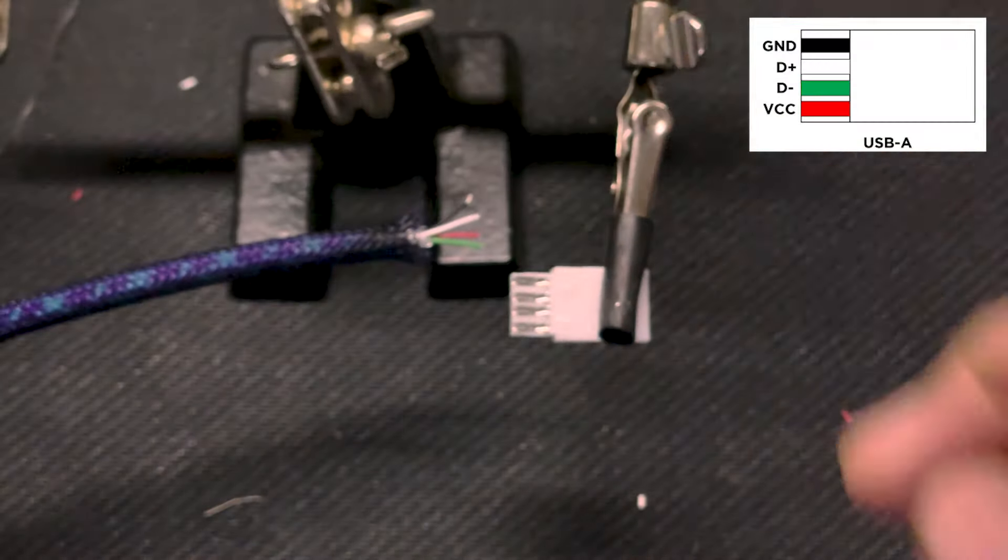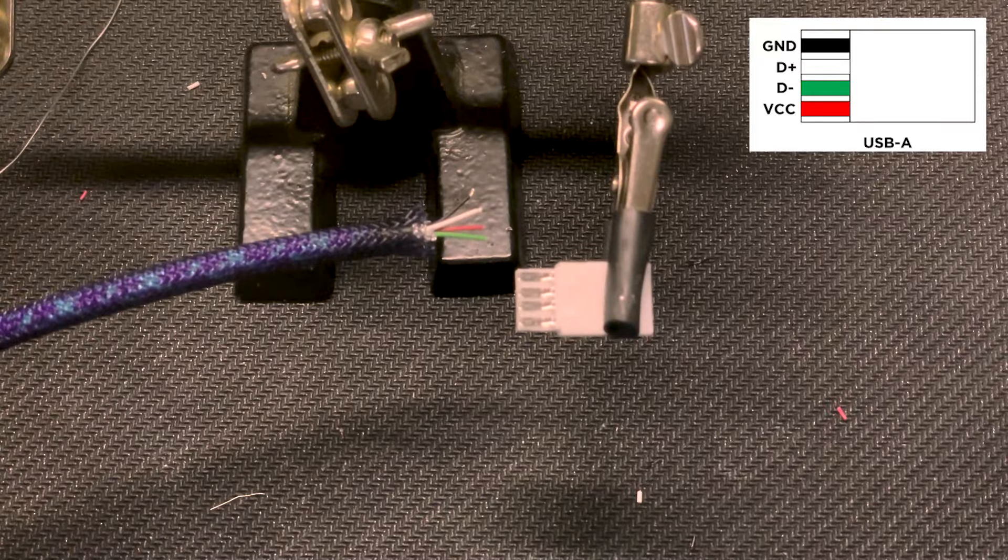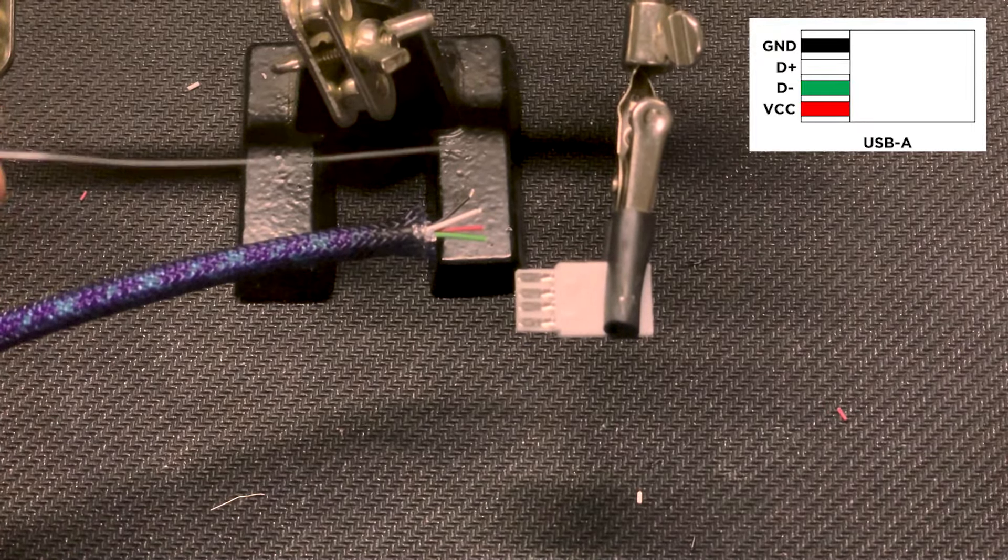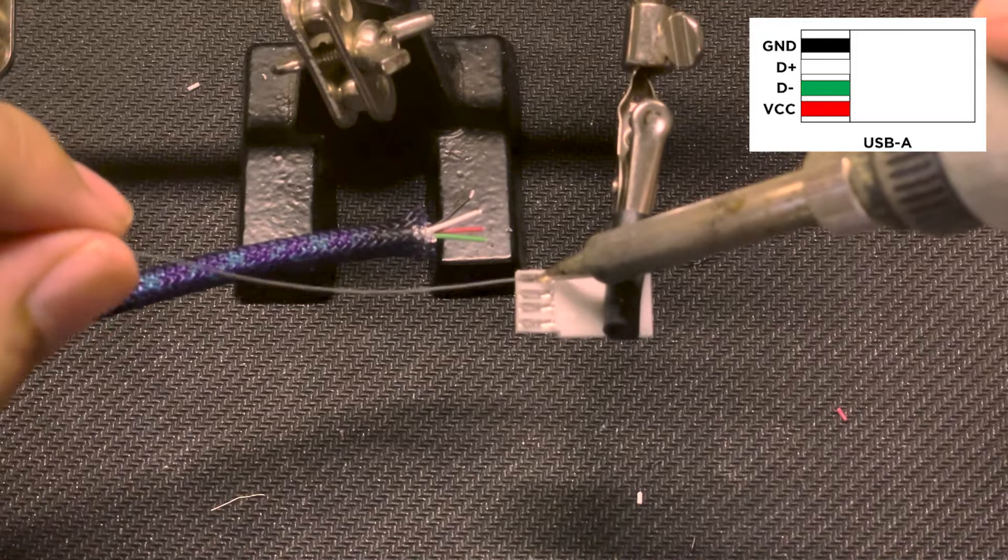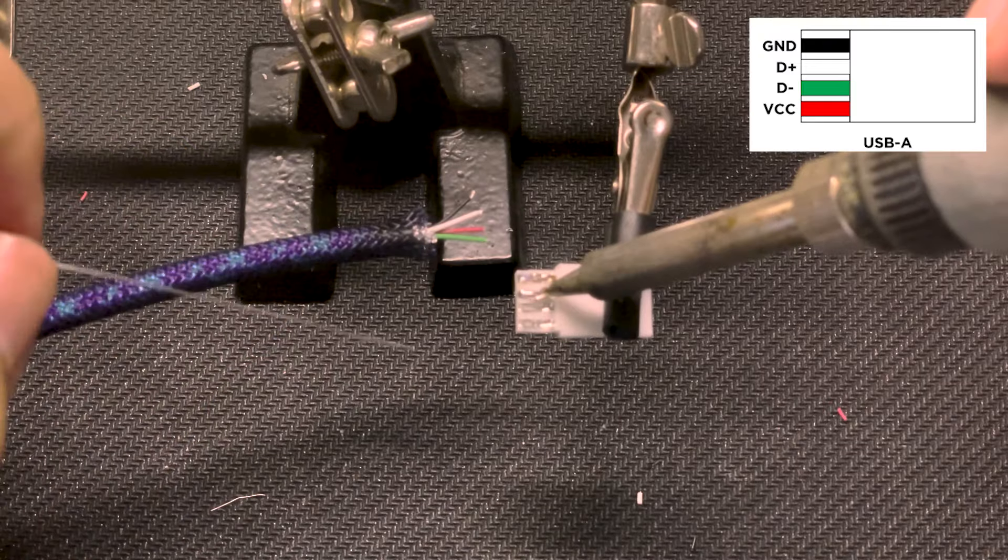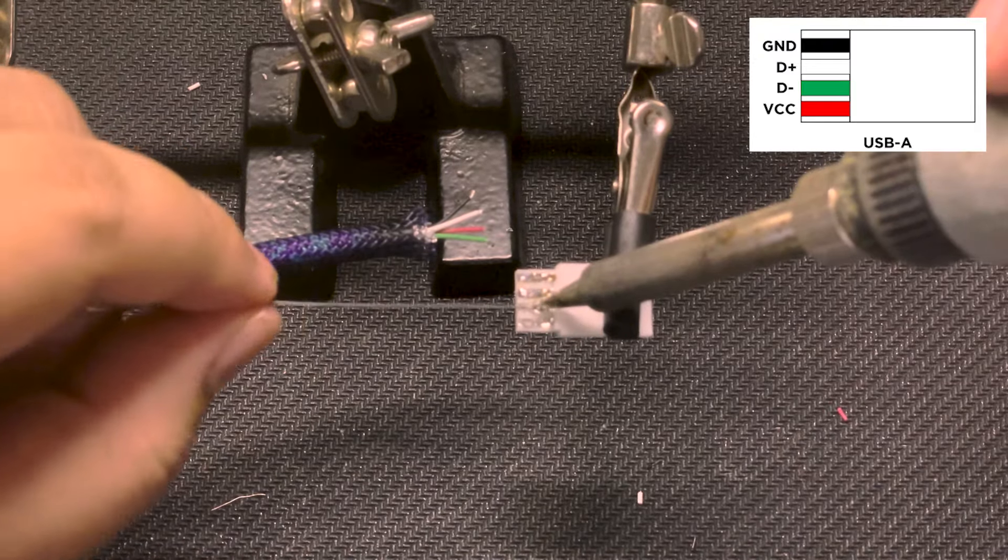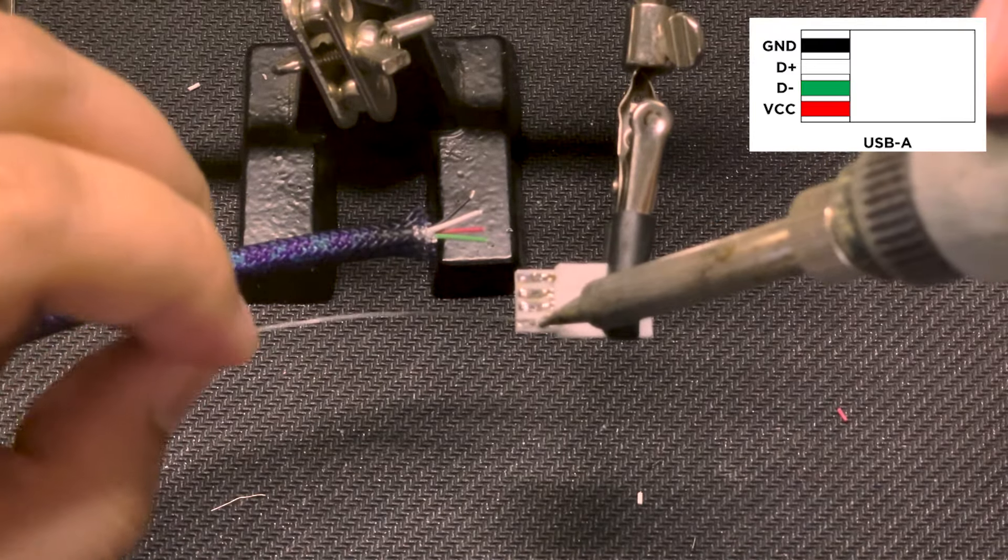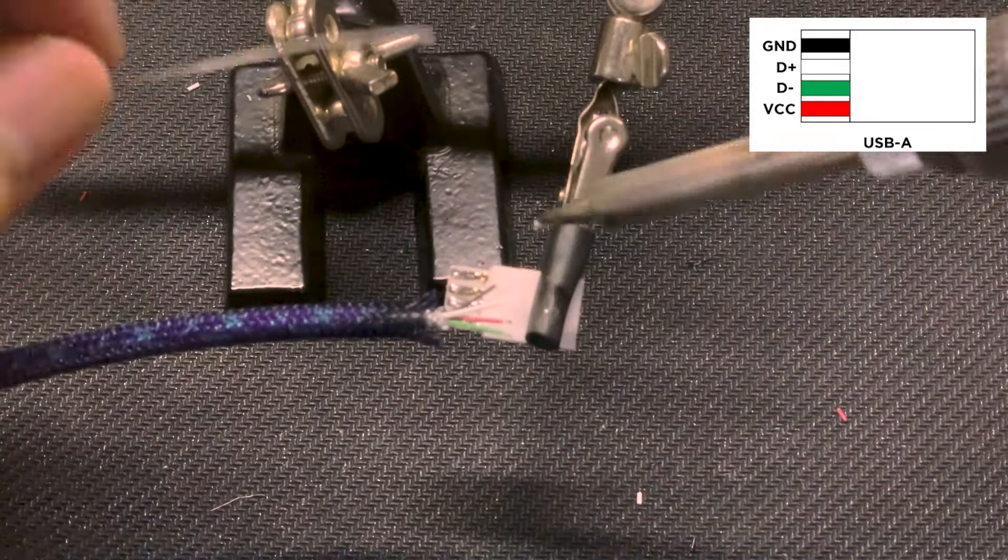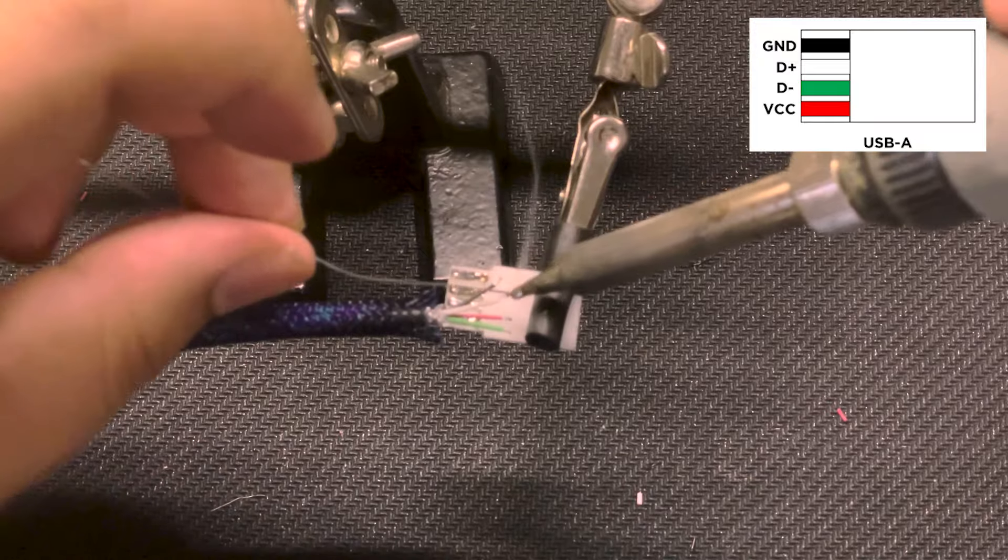And of course we have to do the other side as well, the USB-A. Probably done hundreds if not thousands of these. So using the same pinout as displayed on the top right of the video, I'm going to go ahead and do the same process of tinning our individual contact points on the connector as well as adding some solder to the exposed wires before soldering everything together.